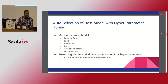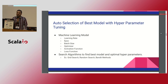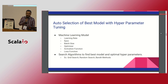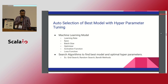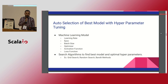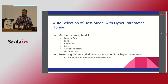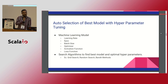You also have to tune the learning rate, epoch, batch size, optimizer algorithm, activation function, loss function, and search algorithm to find the best model and optimal hyperparameters. As of now, TransmogrifAI uses three algorithms — grid search, random search, and bandit methods — to figure out the best model and give all statistical summaries to you as a developer.